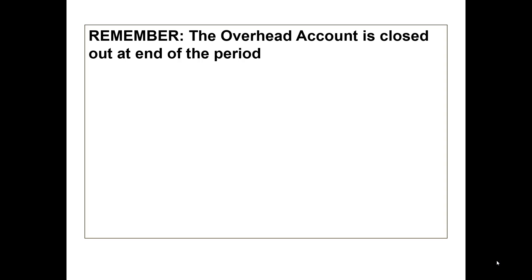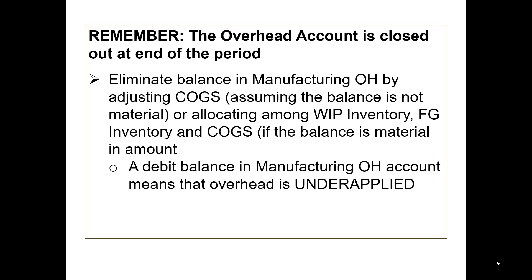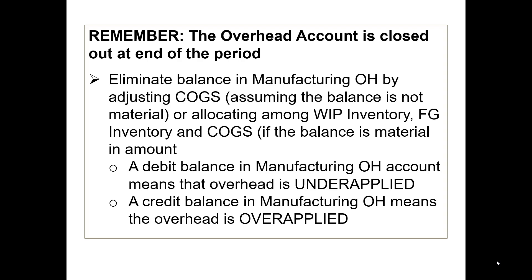Remember that the overhead account is closed at the end of the period. You will eliminate the balance in overhead by adjusting cost of goods sold if the amount is not significant. Or you will allocate to work in process inventory, finished goods inventory, and cost of goods sold if the balance is material. If it's not significant in dollar amount, we simply close it to cost of goods sold. A debit balance in the overhead account means it's under-applied; a credit balance means it's over-applied. In this class, we'll assume any under or over applied overhead is immaterial and close it to cost of goods sold.